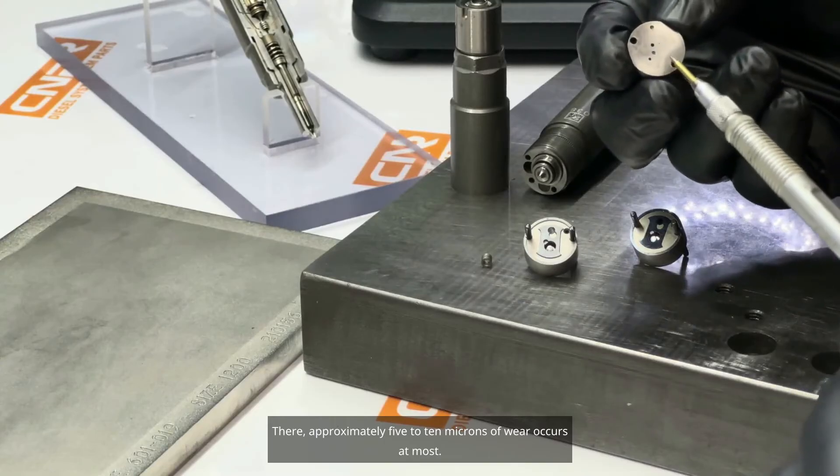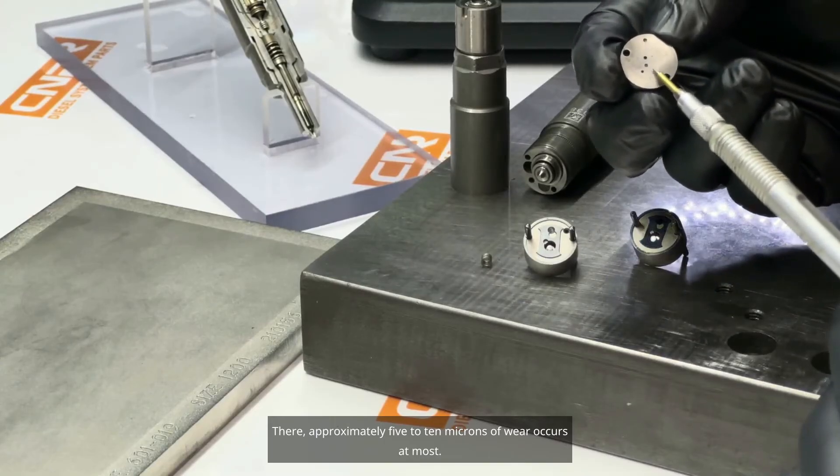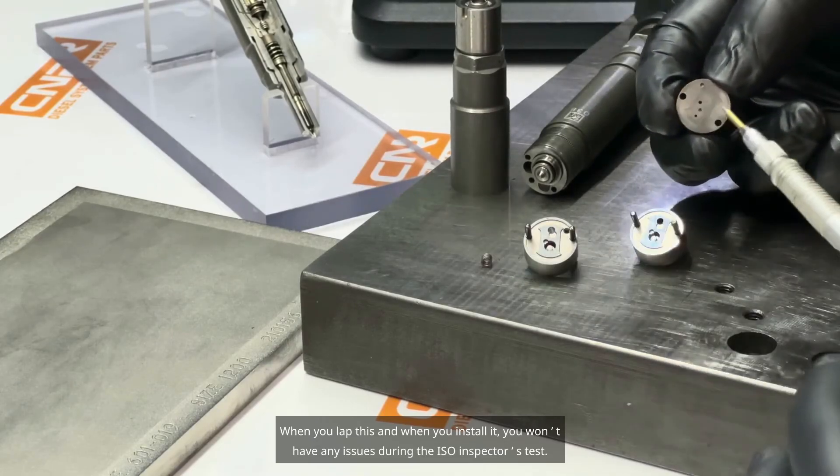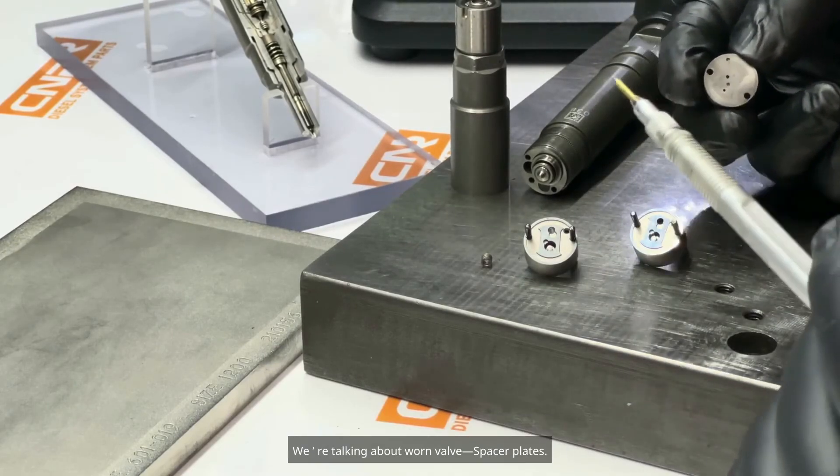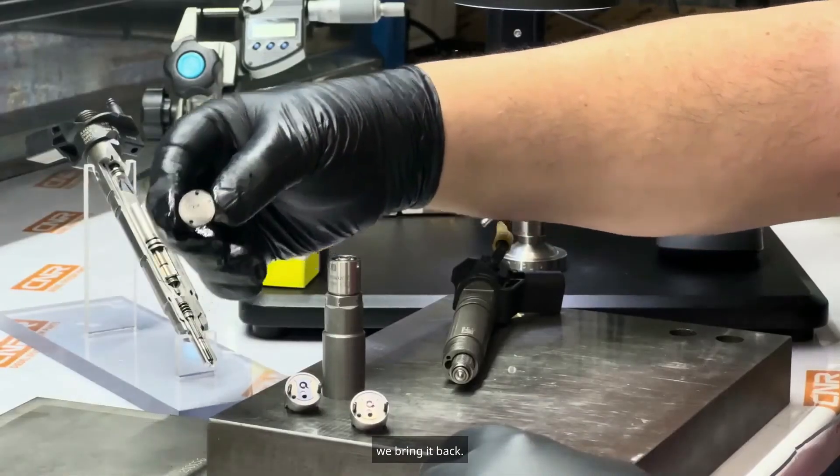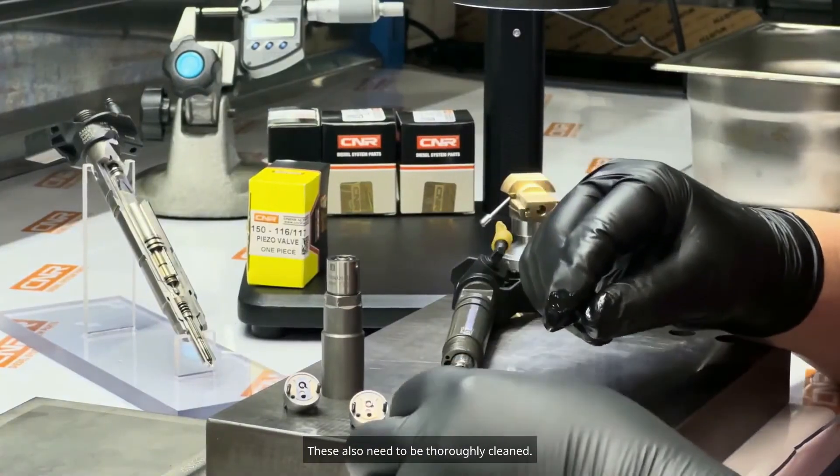There, approximately 5 to 10 microns of wear occurs at most. When you lap this, and when you install it, you won't have any issues during the ISO inspector's test. We're talking about worn valve spacer plates. After lapping the surface, we bring it back. These also need to be thoroughly cleaned.